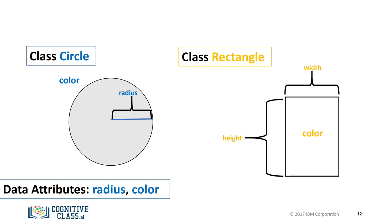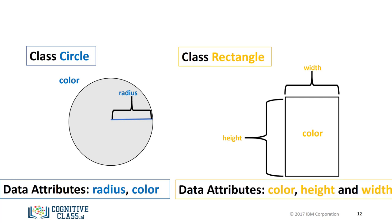Similarly, examining the image, in order to define a rectangle we need the height and width. We will also add color to distinguish between instances. Therefore the data attributes are color, height, and width.